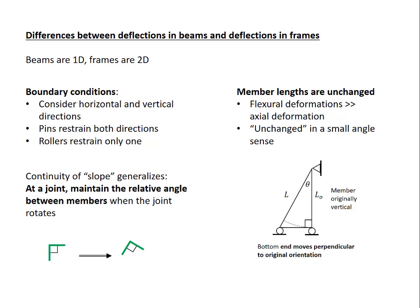However, if the angle theta is really small, as we have in real structures, the deformations in real structures are very small, the length L and the length L0 can be shown to be practically the same. So when we draw deformed shapes, we move the ends of the member perpendicular to the original orientation.